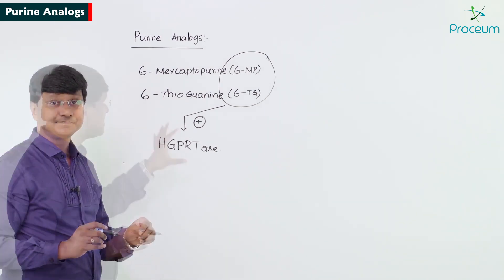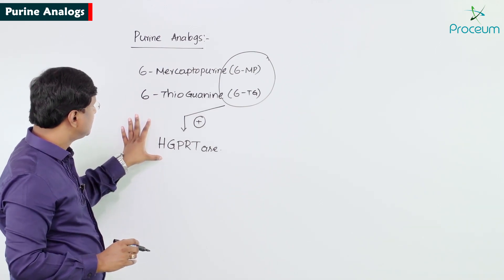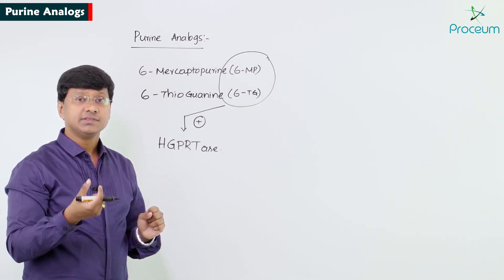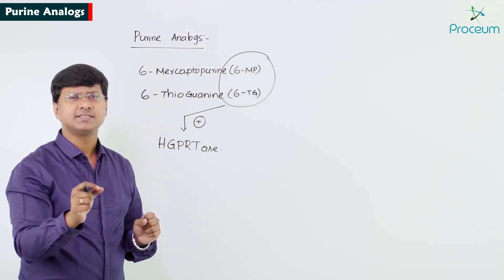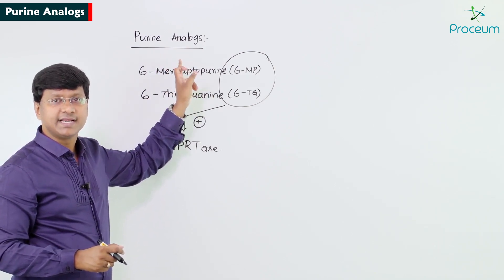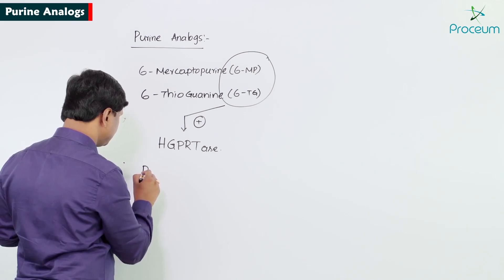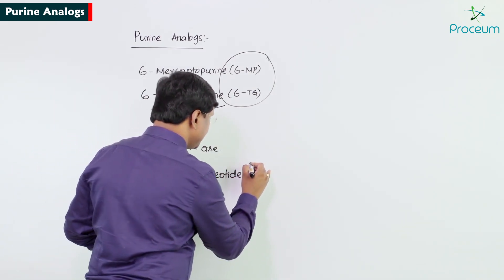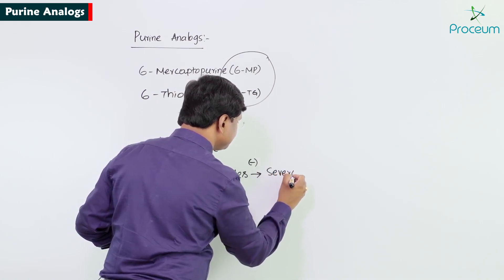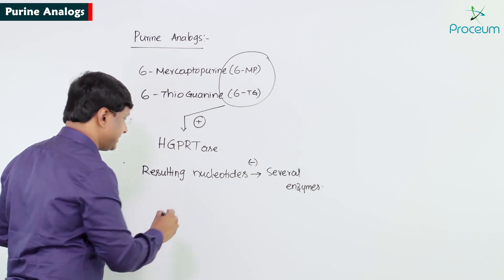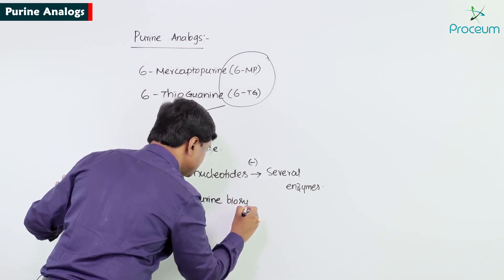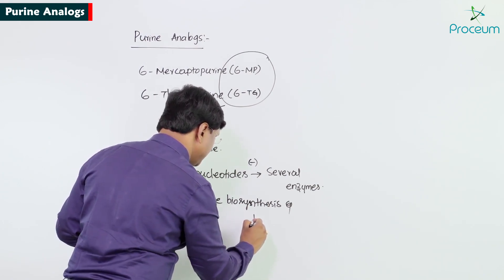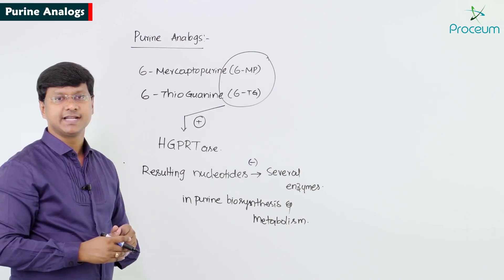Once these drugs are metabolized, the resulting nucleotides inhibit several enzymes in purine biosynthesis as well as in the metabolism of purines.